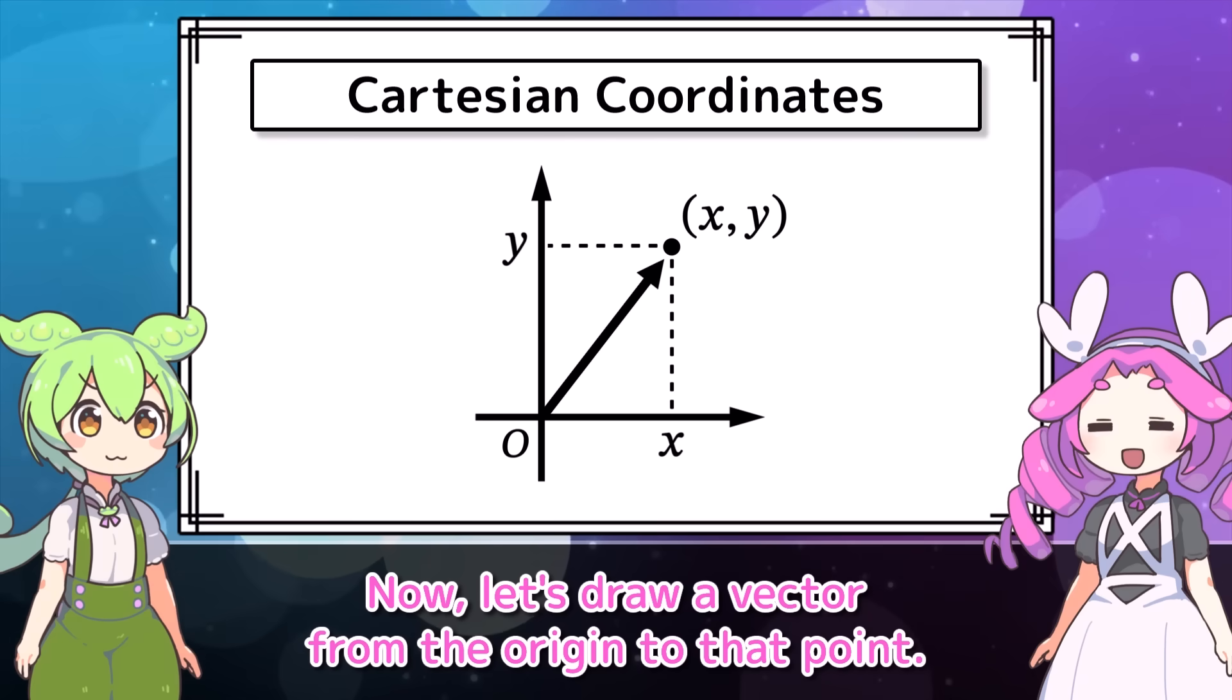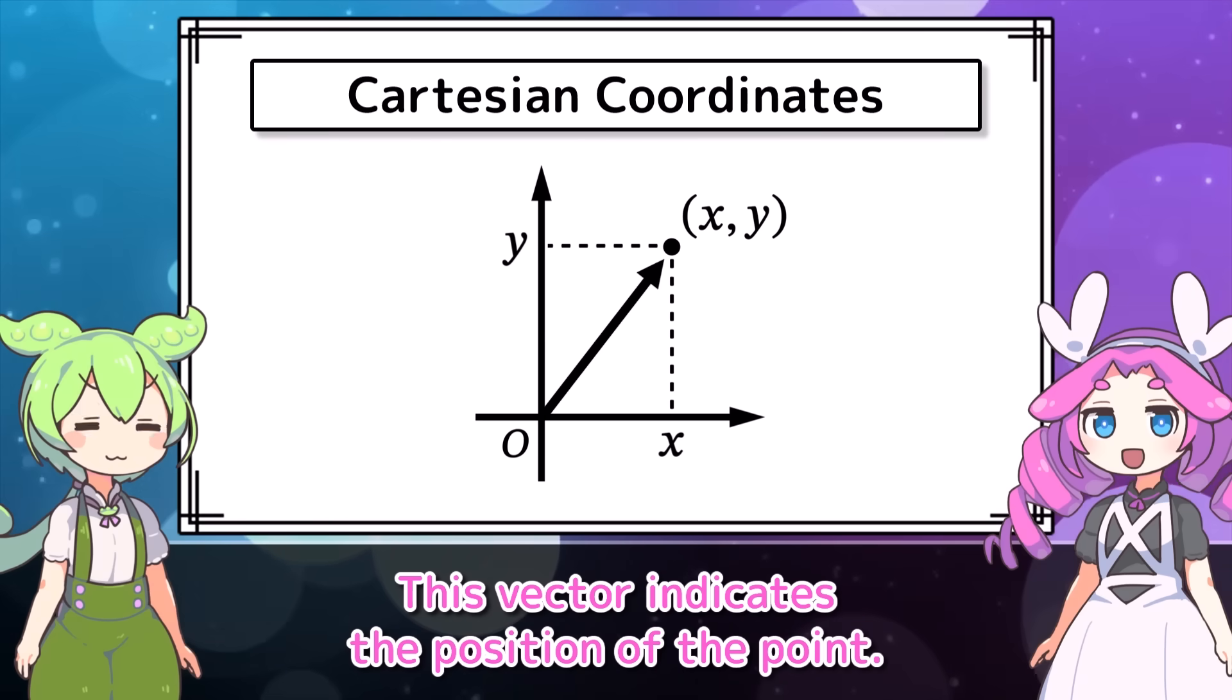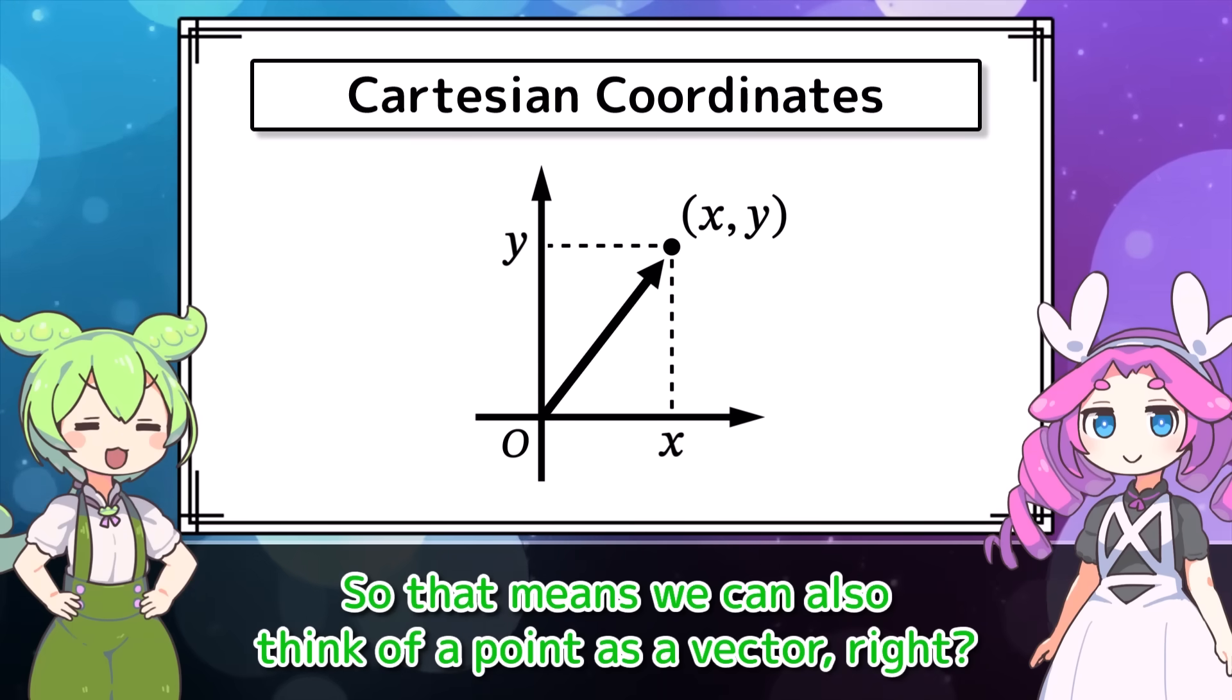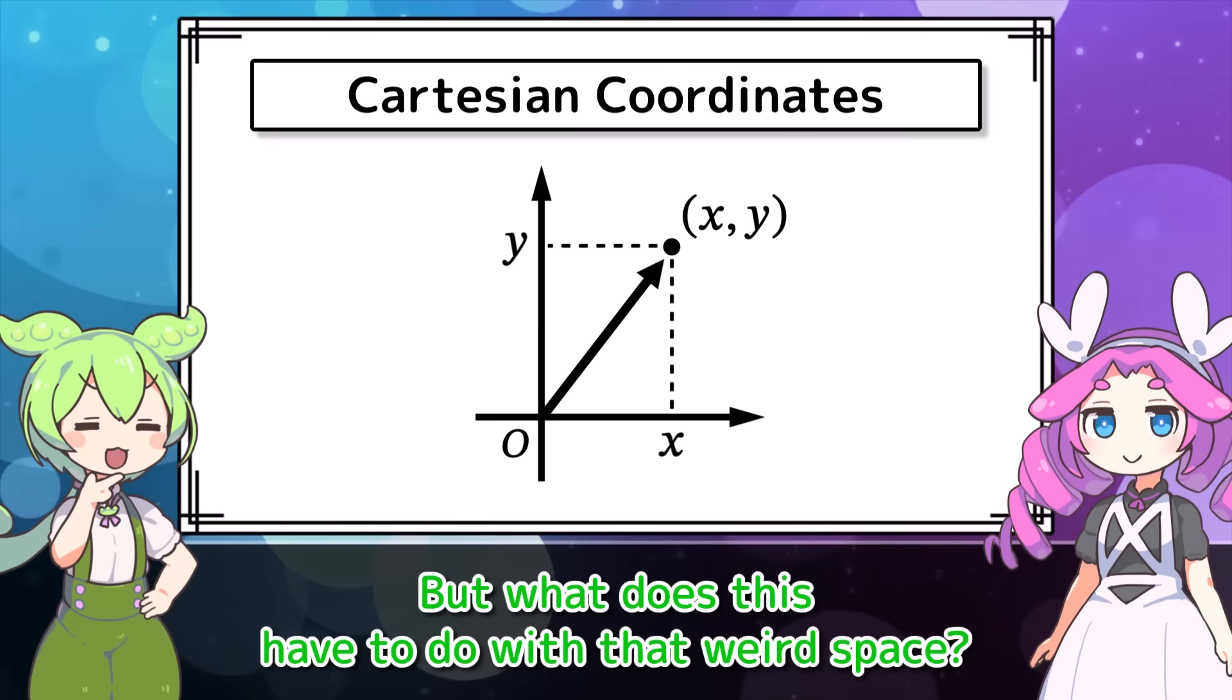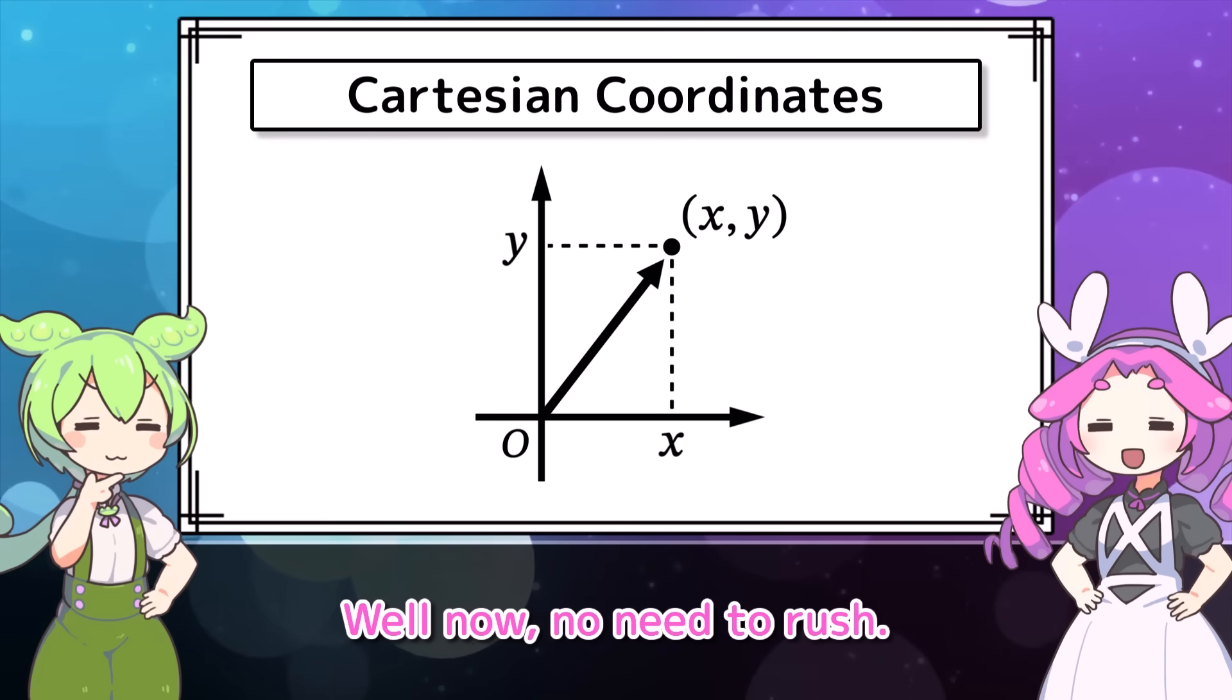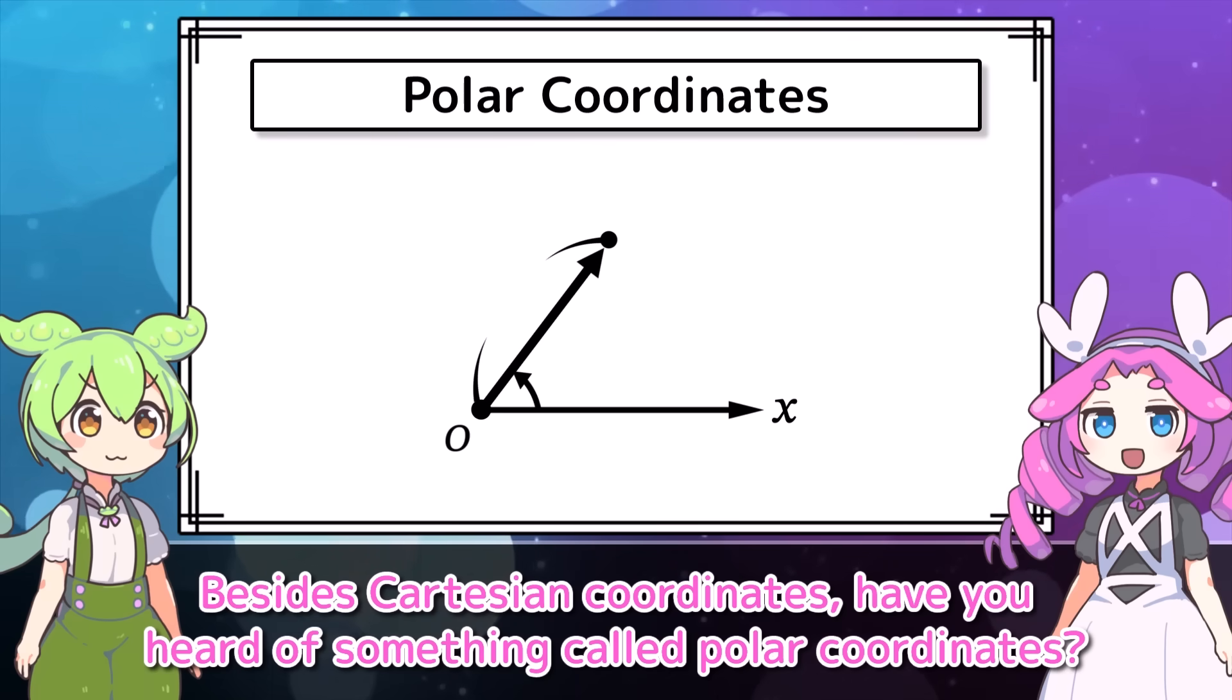The point on the plane is represented as a pair of numbers along two perpendicular axes. Now, let's draw a vector from the origin to that point. This vector indicates the position of the point. So that means we can also think of a point as a vector, right? That's exactly right. But what does this have to do with that weird space?